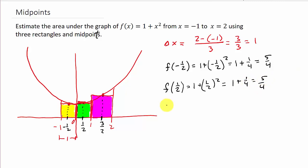And then I need the height of the last rectangle. Well, if I plug this x value in, that's going to give me this y value, which is giving me the height of the rectangle. So f of three-halves is 1 plus three-halves squared, which is 1 plus nine-fourths, which that is going to be 13 over 4.